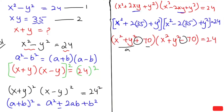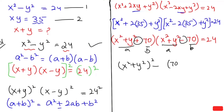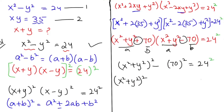Now here we have a positive and negative sign, so this is our a and this is our b value according to this algebraic equation. I'm going to write (x² plus y²)² minus 70² is equal to 576. Note: I forgot to put the square earlier — that's corrected now. So this turns to (x² plus y²)² minus 4900 is equal to 576.